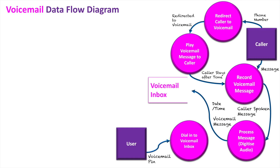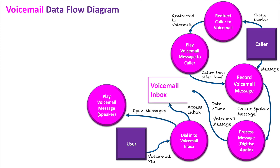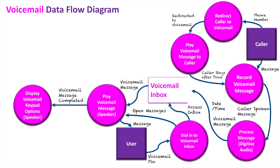So then how does the user access this message? What they need to do is enter their PIN, dial into their voicemail inbox, get access to the inbox, and then from here they can open their messages. In order for the messages to be played, it gets the first message — the most recent message from the voicemail inbox — and it begins playing the first voicemail message. Once they've heard that message, it comes back to the user and they are then given their options.